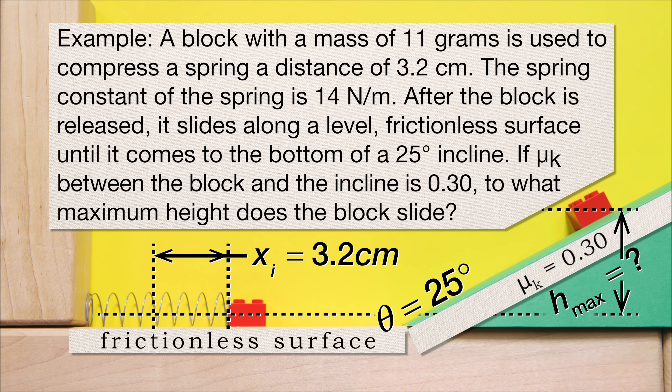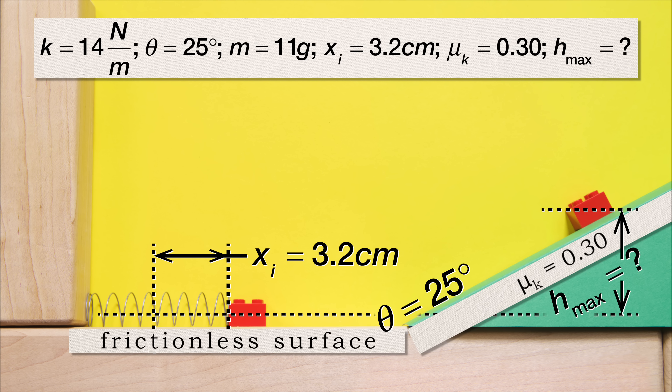Our knowns are: the spring constant of the spring is 14 newtons per meter, the angle of the incline is 25 degrees, the mass of the block is 11 grams, and the initial compression of the spring, x, is 3.2 centimeters.